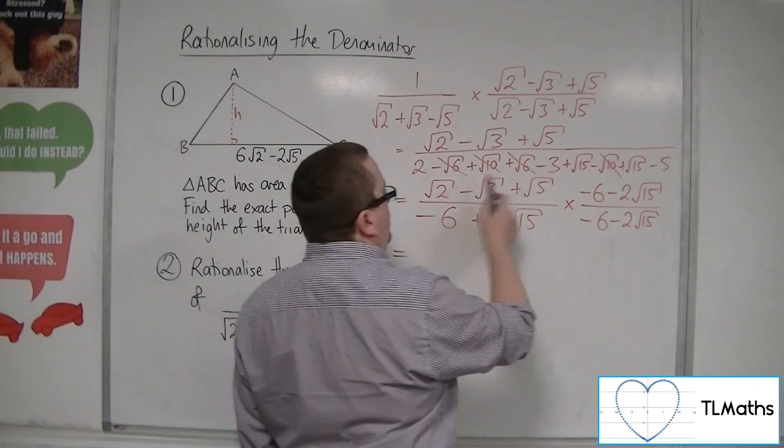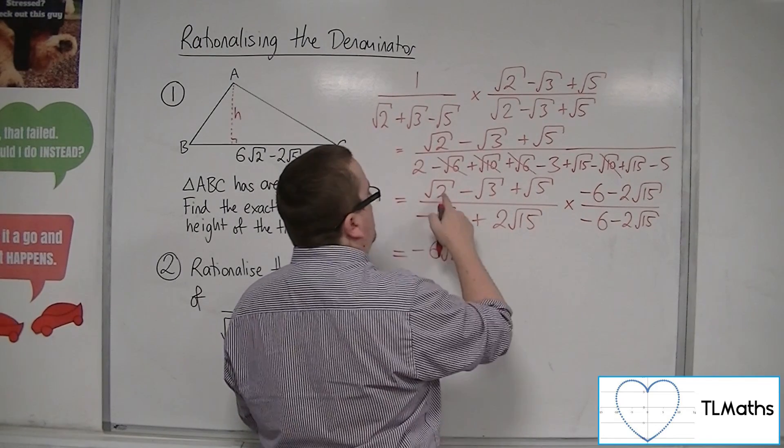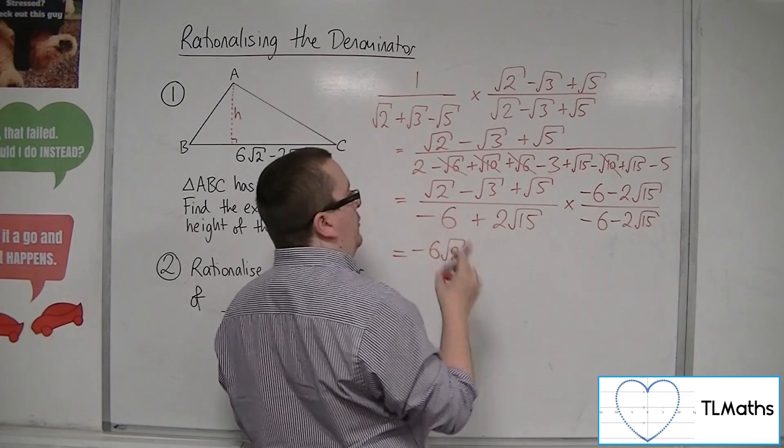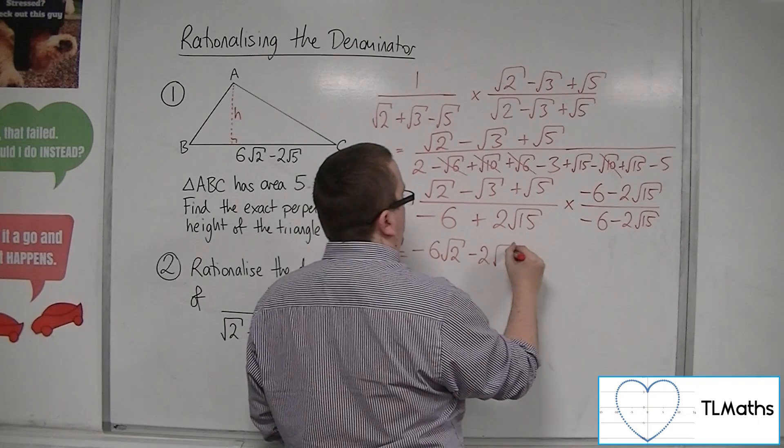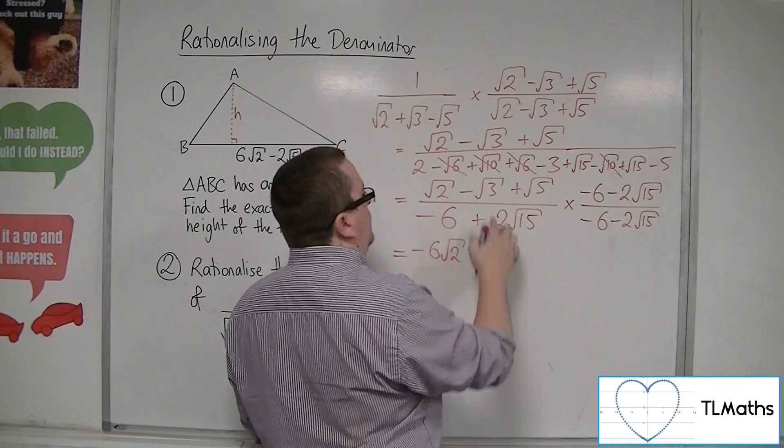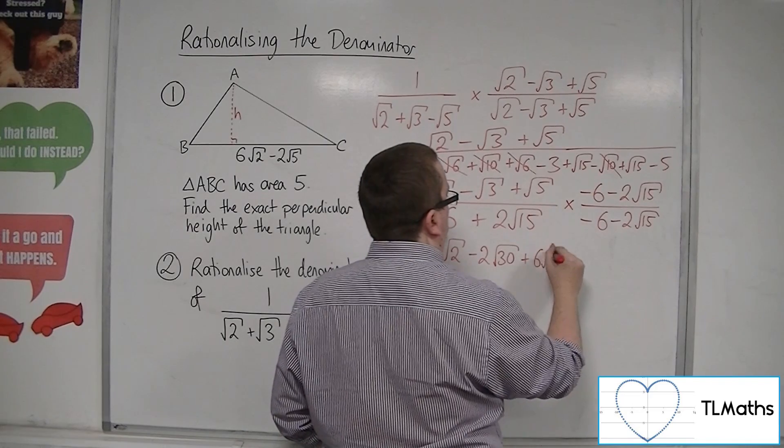So, root 2 times minus 6, so minus 6 root 2. Root 2 times minus 2 root 15, so minus 2 root 30. We've got the minus root 3 times minus 6, so plus 6 root 3.